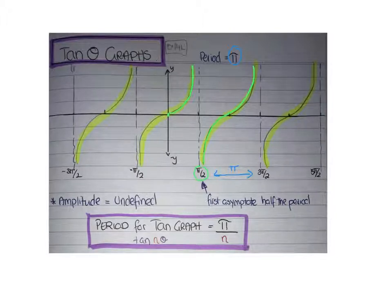If you're going to find the period of the tan graph, you're going to do π divided by the number in front of the angle. Remember, for cosine and sine it was 2π divided by n.